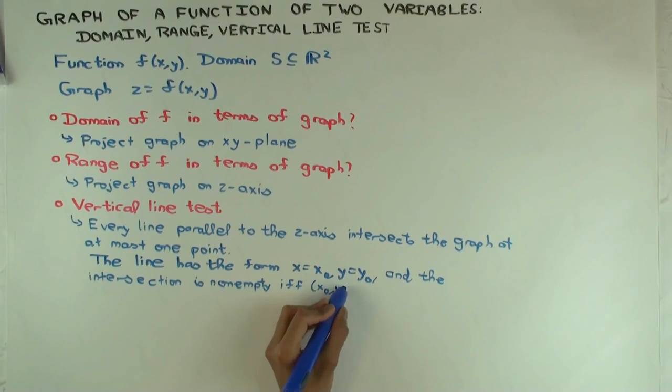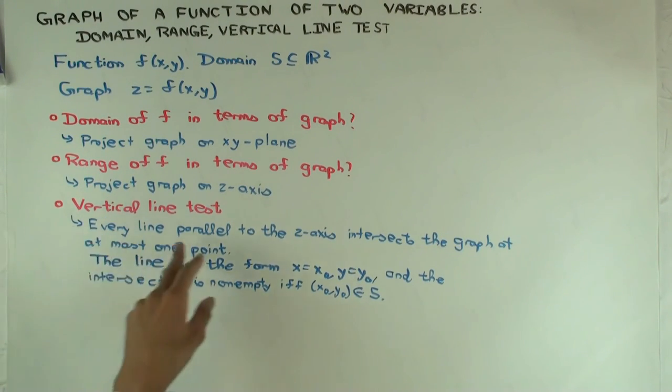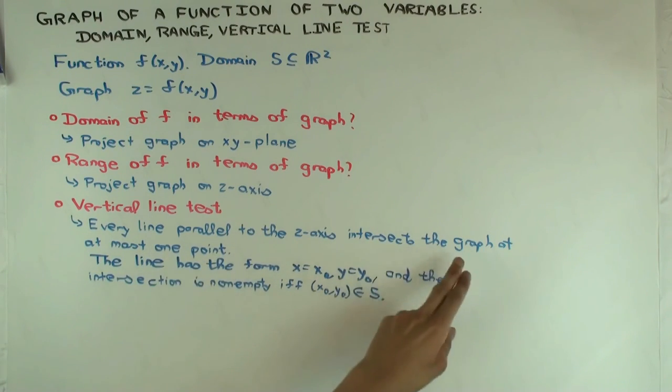Okay? So actually, the vertical line test says something slightly stronger. It says that if you have any picture which has this property that every line parallel to the z-axis intersects that picture in at most one point, then that picture is the graph of some function. And you can reverse construct the function from the picture. Okay. Right? Okay.